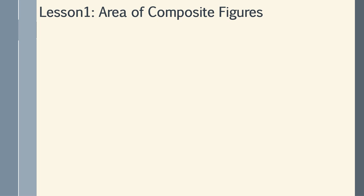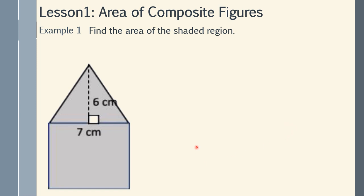Now let's have our lesson. Example 1: find the area of the shaded region. This is an example of a composite figure. A composite figure is made up of two or more geometric figures. Here, it's made up of a square with side 7 cm and a triangle with height 6 and base 7 cm. The total area should equal the area of the square plus the area of the triangle.